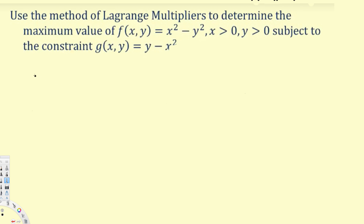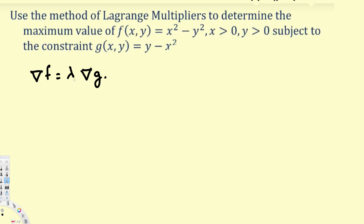To find the critical points we use the equation: gradient of f equals lambda times gradient of g. This means we take the partial derivative of f with respect to x and equate it to lambda times the partial derivative of g with respect to x. This lambda is the Lagrange multiplier.